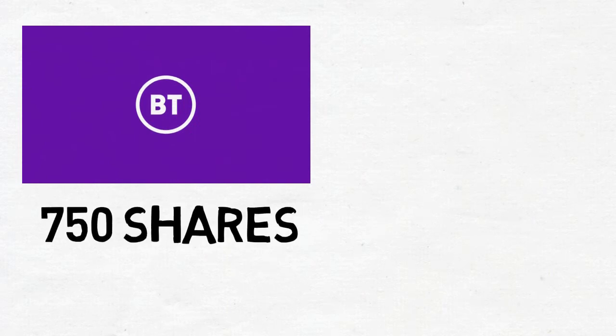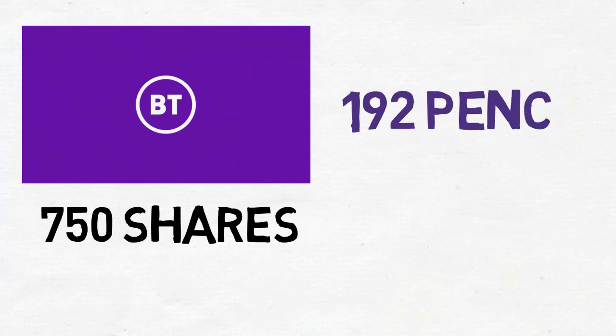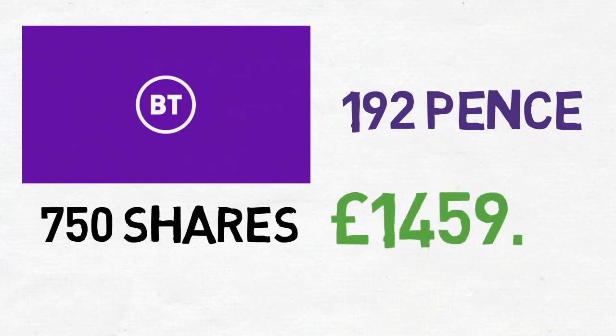I think it's important for you, the viewers, to have a fully transparent view of the portfolio, so there's no hiding any crucial details in the whole experiment. So with that in mind, here's the important information. I bought 750 shares of BT Group PLC at 192 pence each. With the fees and commission charges, the total came to £1,459.80.